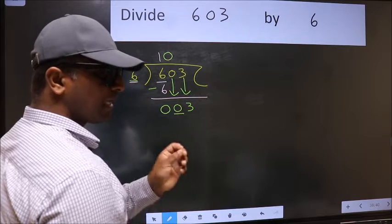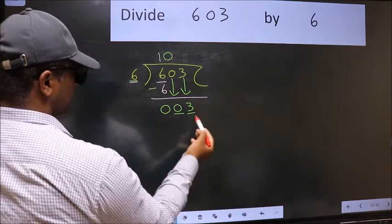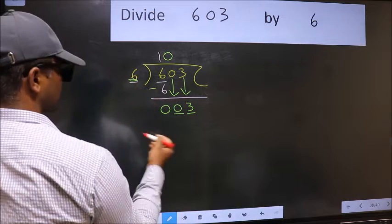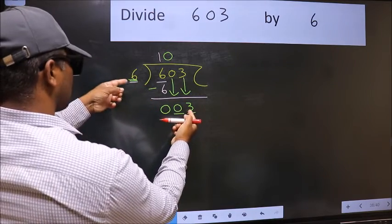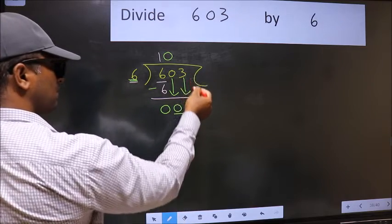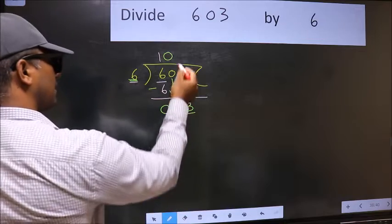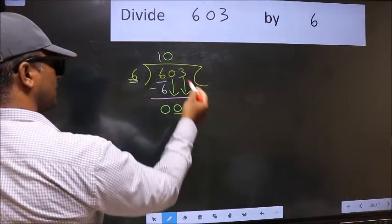After this step, the mistake happens. And the mistake is this: here we have 3 and here 6. 3 is smaller than 6, and we don't have any more numbers to bring it down. So what many do is they directly put dot, take 0. Which is wrong.